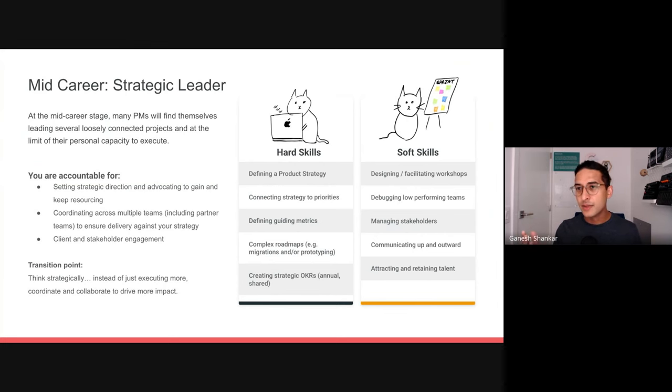Let's talk about the skills you need at this stage. On the hard skills side, there is obviously building product strategy. If you have the time and inclination, I highly recommend a book called Good Strategy, Bad Strategy. It goes into a lot of detail. It's just excellent.